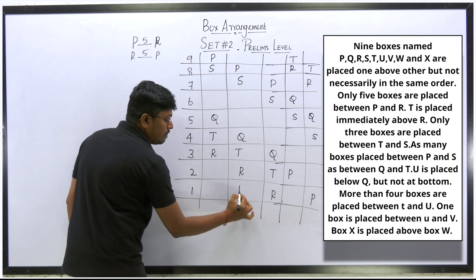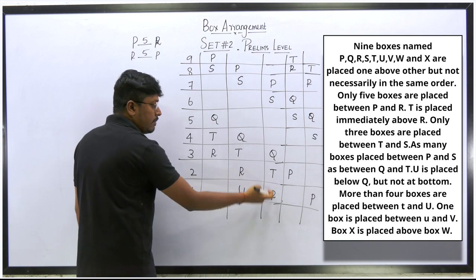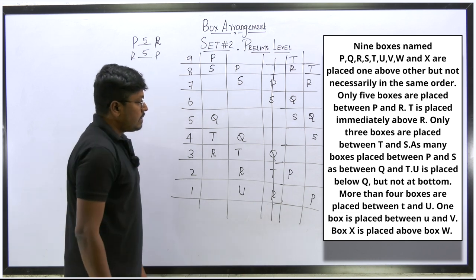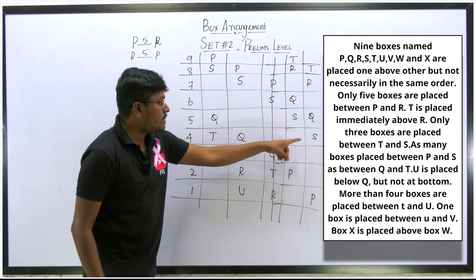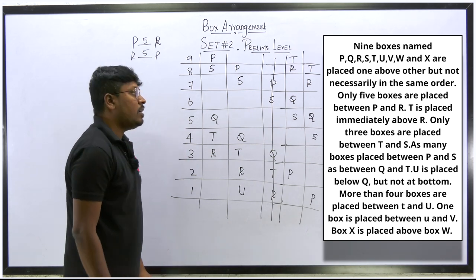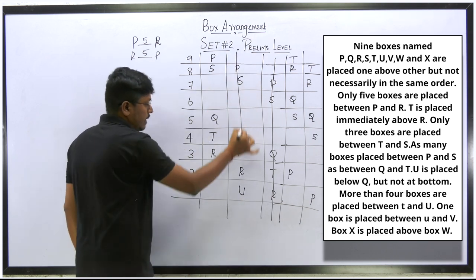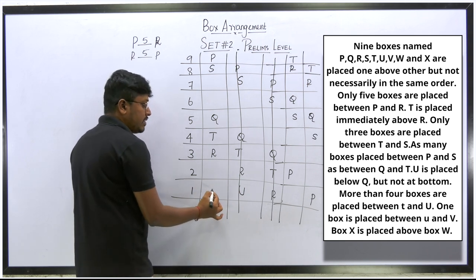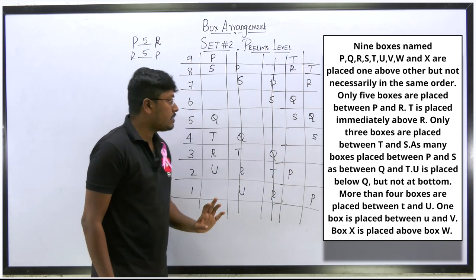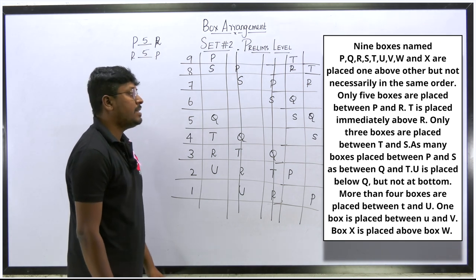U is placed below Q but not at the bottom. In one diagram we fix U below Q. In another possible diagram there is no valid position for U, so that diagram is eliminated. In yet another diagram, U ends up at the bottom position, which violates the condition, so that diagram is also eliminated. We are left with two possible diagrams.